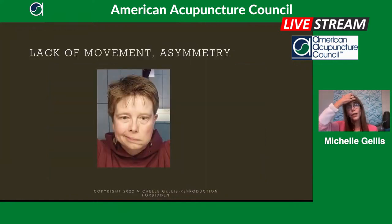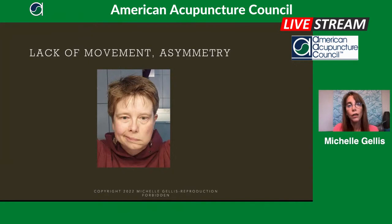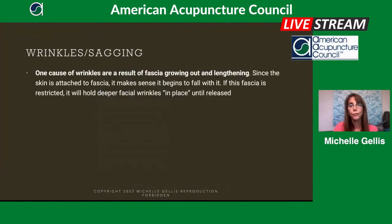Here's a picture of someone with Bell's palsy. They're making a facial expression with the right side of their face, but the left side of their face isn't moving at all. Part of this is due to nerve damage, but it can also be from entrapment.